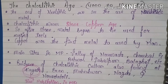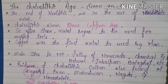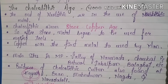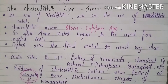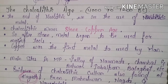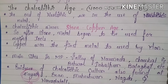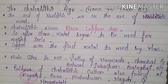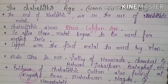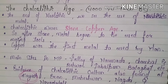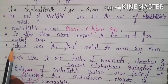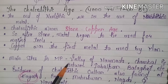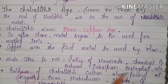The Chalcolithic age lasted from 4000 to 1200 BC. At the end of the Neolithic, we see the use of metal. Chalcolithic means stone-copper. After stone, metal began to be used for making tools. Copper was the first metal to be used by humans. Its main sites are the valleys of Narmada, Chambal, and Betwa.